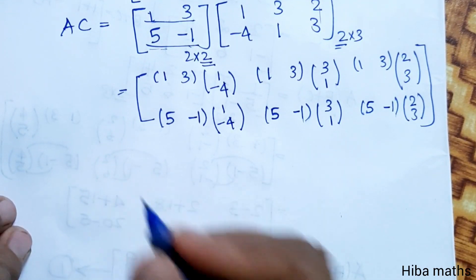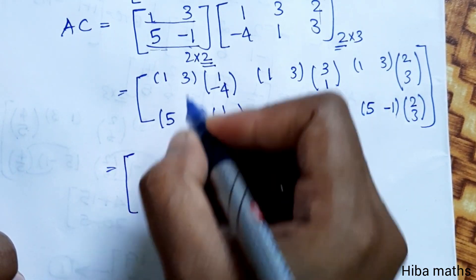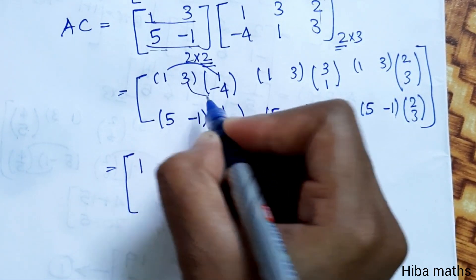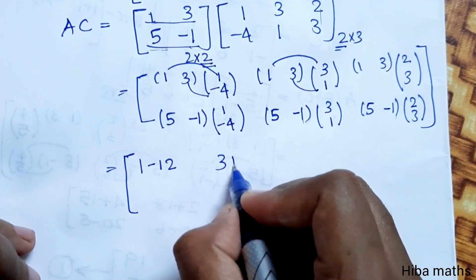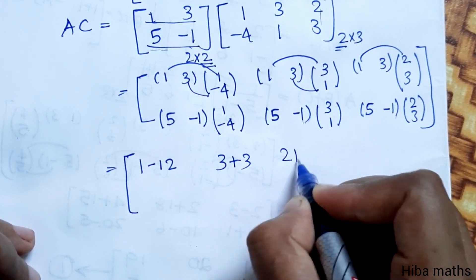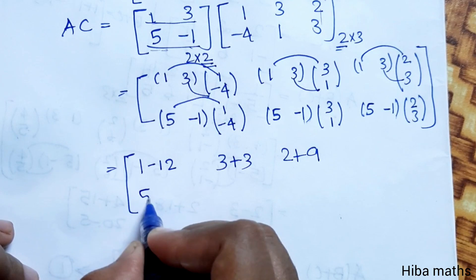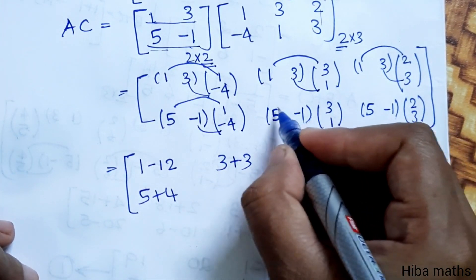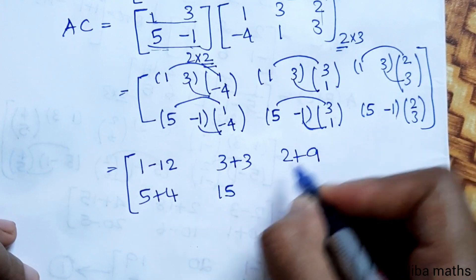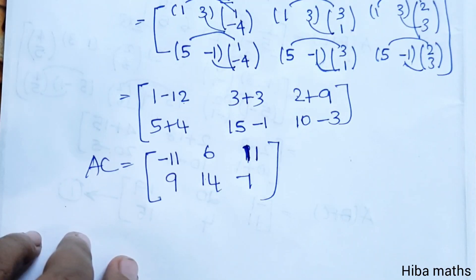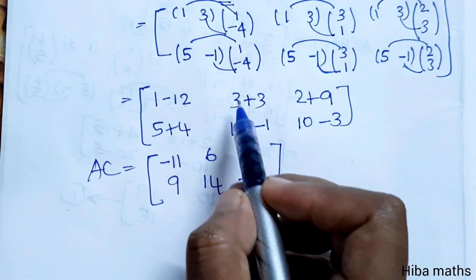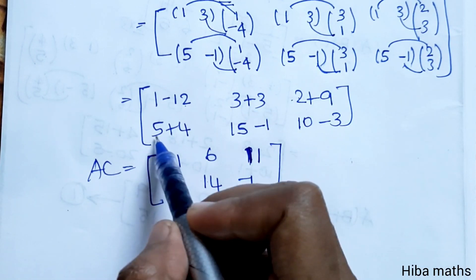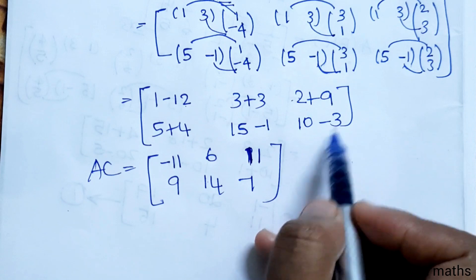Computing AC entries: 1×1 + 3×(-4) = 1-12 = -11; 1×3 + 3×1 = 3+3 = 6; 1×2 + 3×3 = 2+9 = 11. Second row: 5×1 + (-1)×(-4) = 5+4 = 9; 5×3 + (-1)×1 = 15-1 = 14; 5×2 + (-1)×3 = 10-3 = 7. So AC equals [-11,6,11;9,14,7].